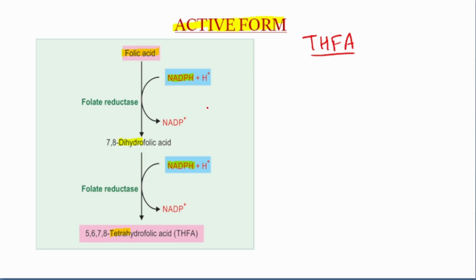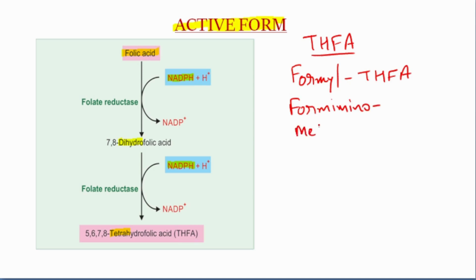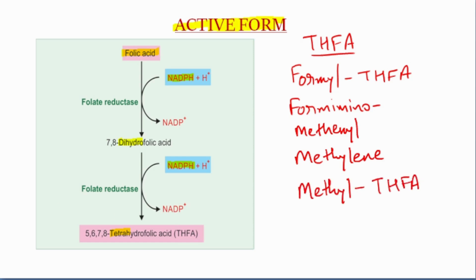Tetrahydrofolic acid is useful in one-carbon metabolism. The carbon groups that attach to it are the formyl group, formimino, methenyl, methylene, and methyl tetrahydrofolic acid. The most active form is methyl tetrahydrofolic acid. These forms are interconvertible.